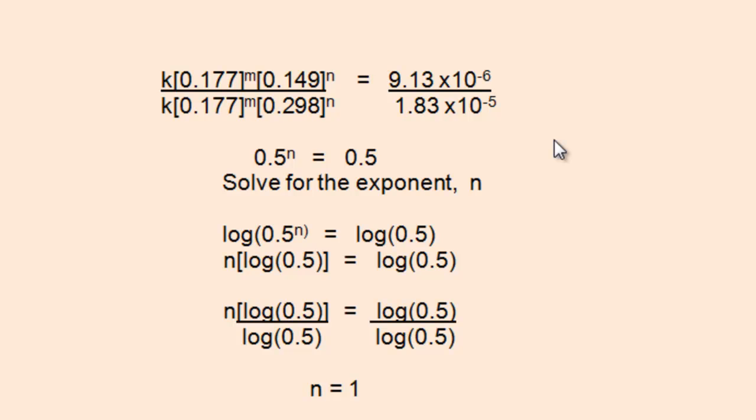To solve for the exponent, use the properties of logs. You could use log base 10, which I did, or the natural log ln. Either one will work. Taking the log of both sides will reduce the equation to the next step, which is n times the log of 0.5 equals the log of 0.5. Now I got from this step down to this n times the log of 0.5 by properties of logs. When you take the log of a number raised to an exponent, that exponent gets put in front as a coefficient in front of the log of that number.